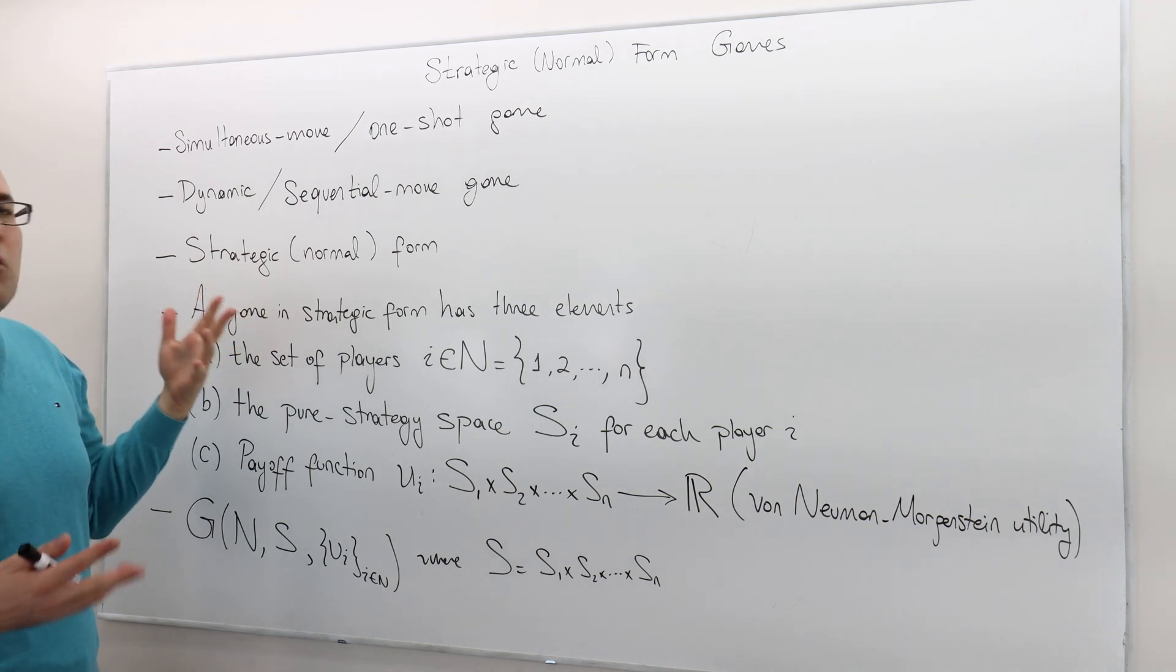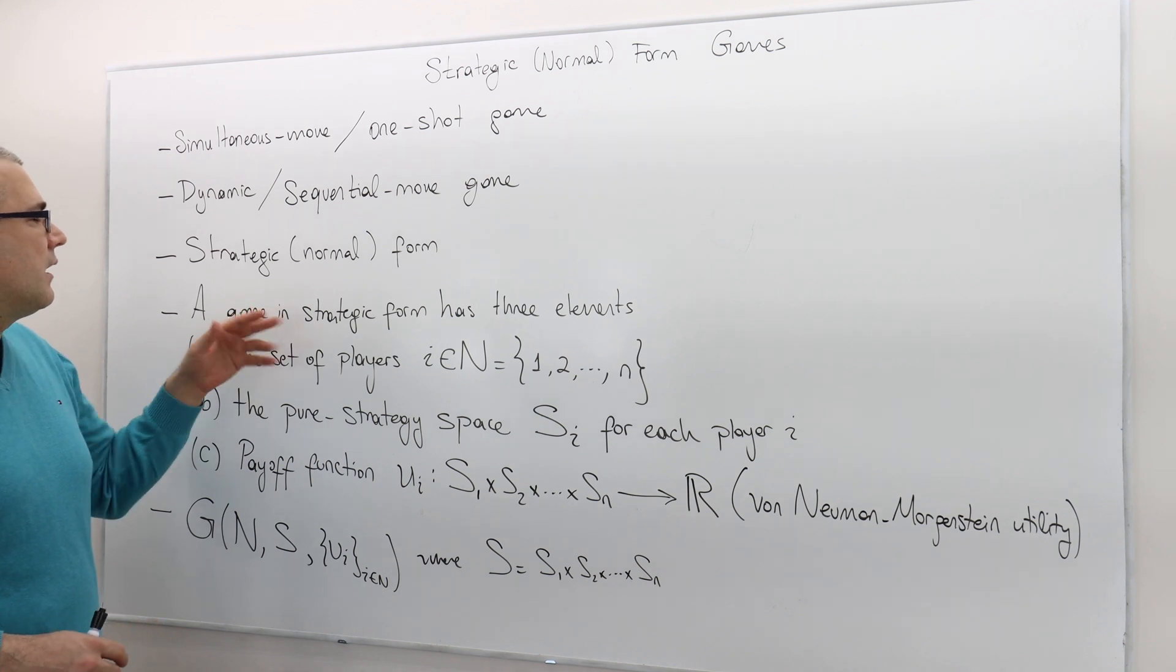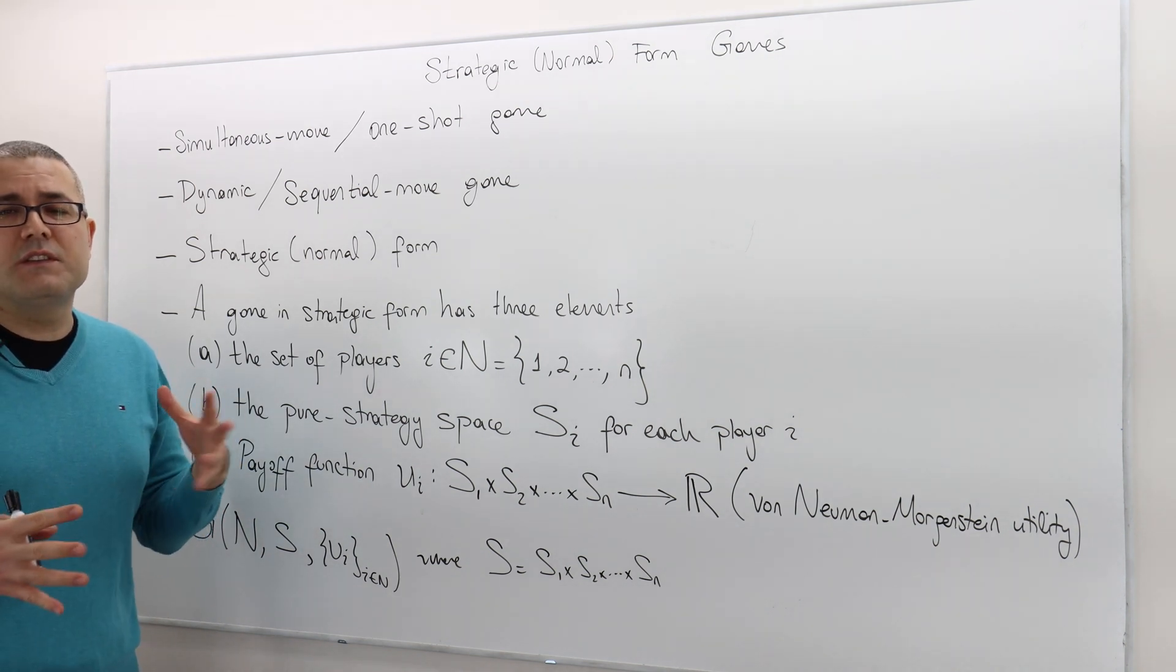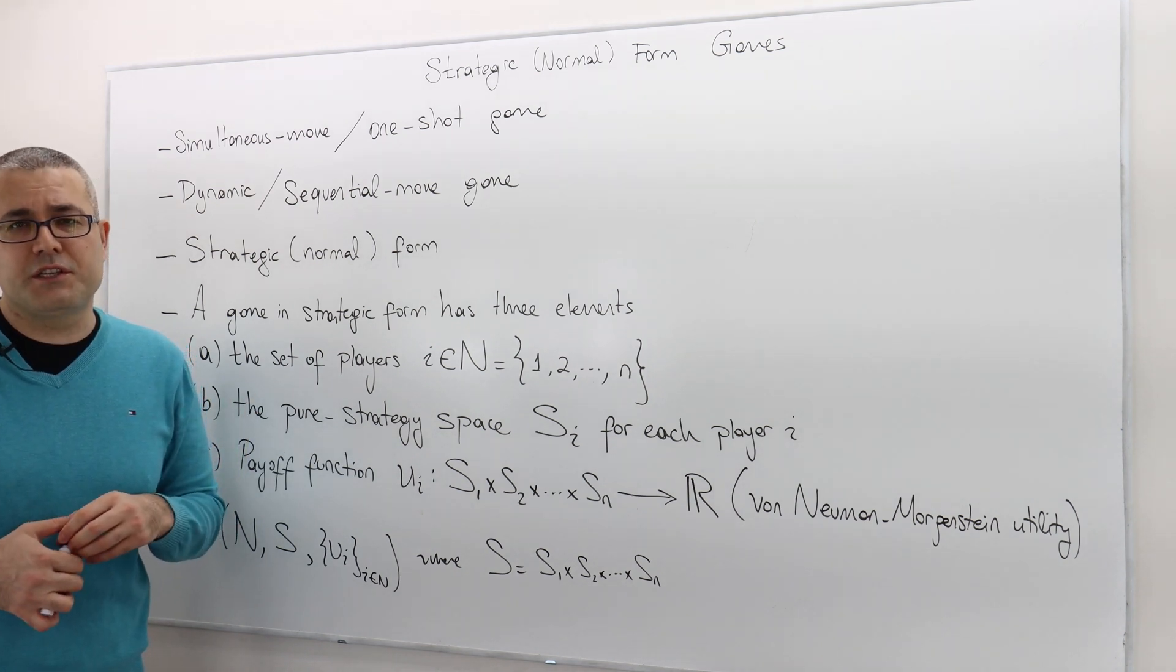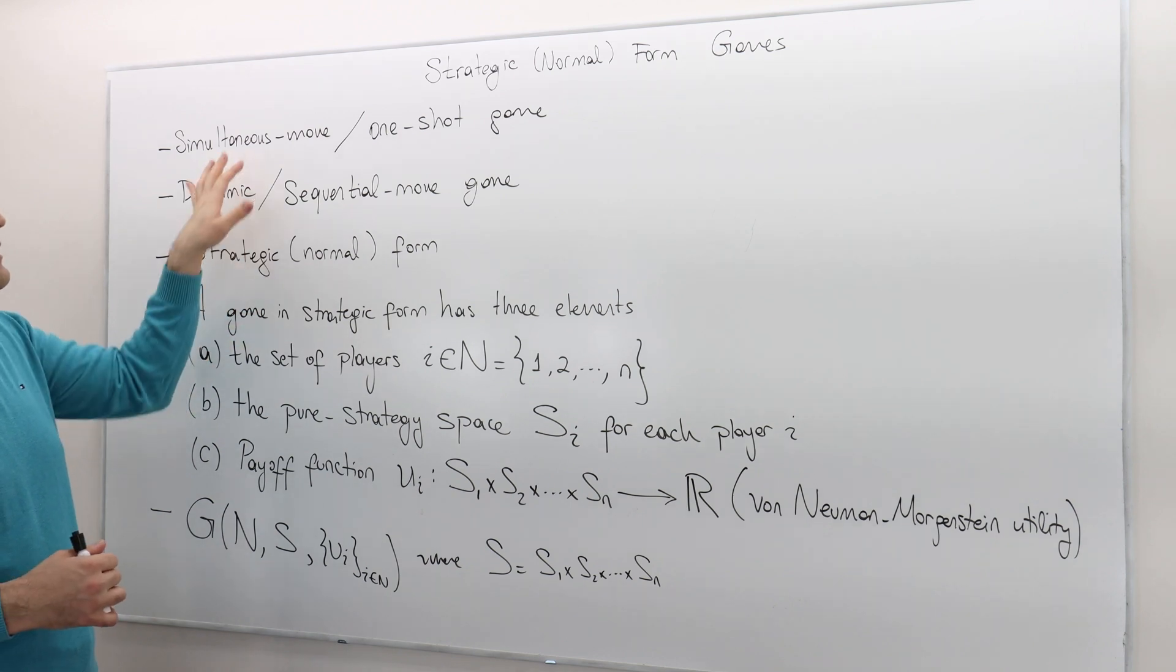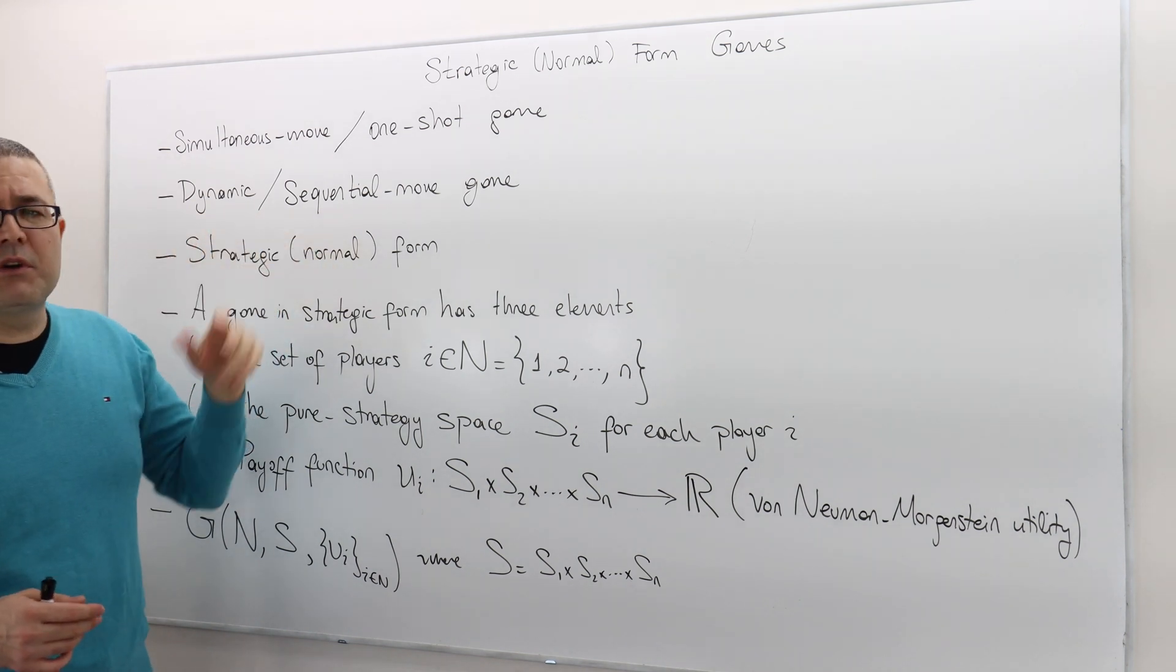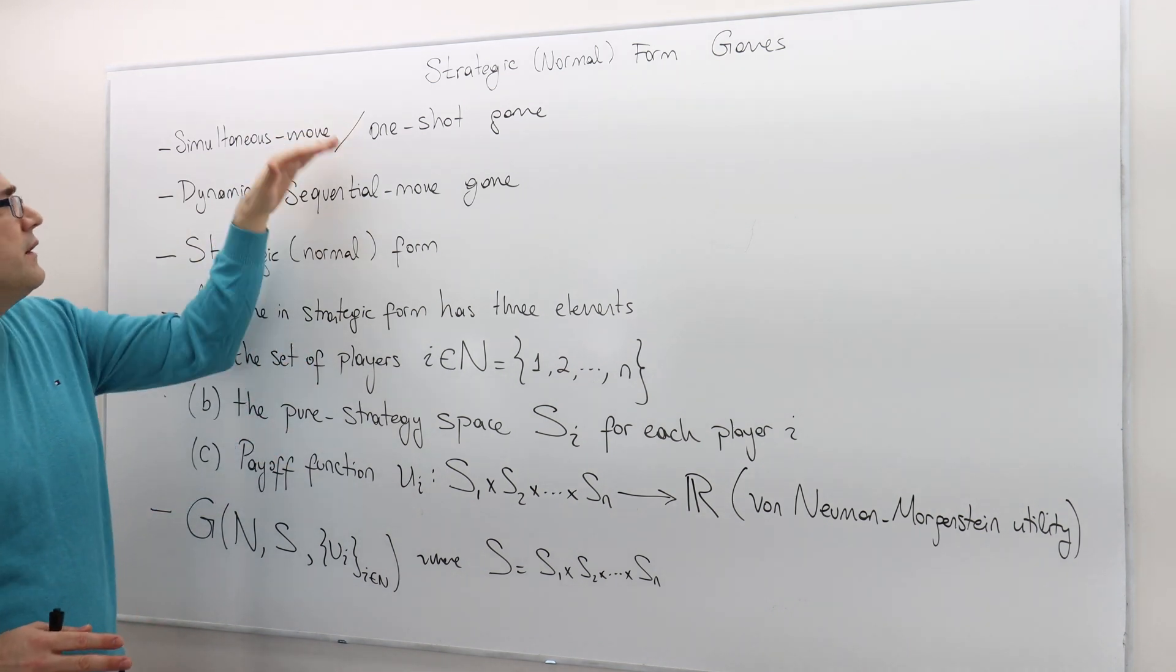We're going to talk about why we use strategic or normal form games, and then what it really means, a strategic or normal form game. There are three basic ingredients. So this is a very simple description of strategic form games. First off, whenever you hear simultaneous move game or one-shot game, we mean exactly the same thing. And similarly, whenever you hear dynamic or sequential move game, we mean the same thing.